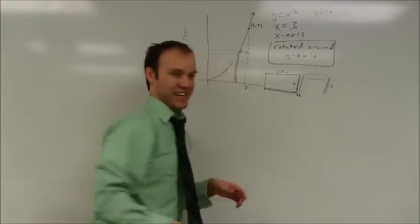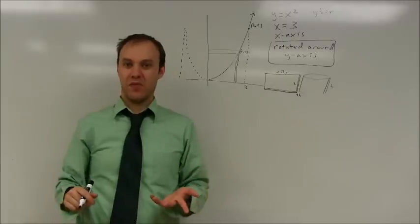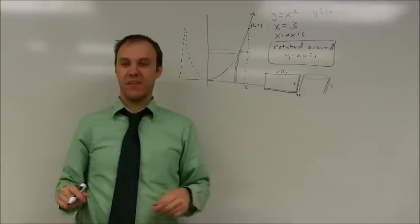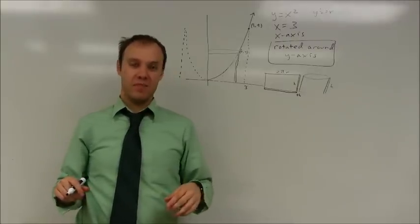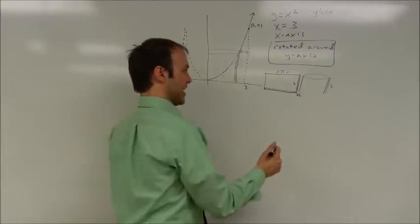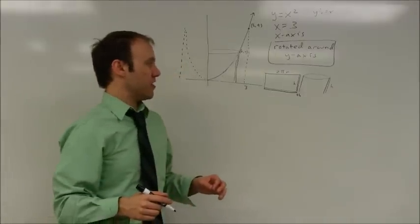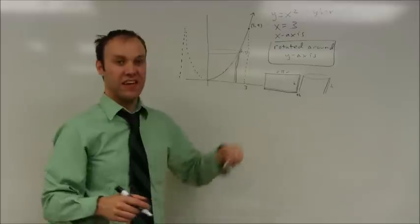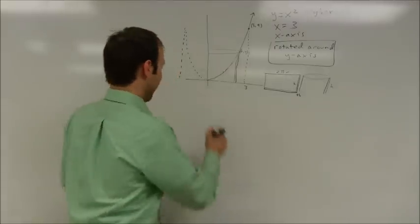And that width is some kind of thickness. I'm going to call it thickness th. I know that kind of creates problems with variables there. But the volume of one of those is 2πr times h times the thickness. 2πr h th.